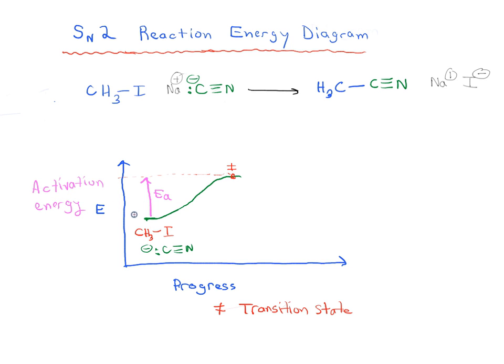So we're going from starting material to product, and the amount of energy it takes to do this is called the activation energy. Now we actually know what the transition state of the substitution reaction looks like.